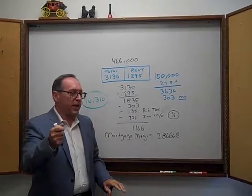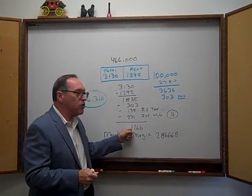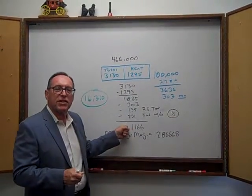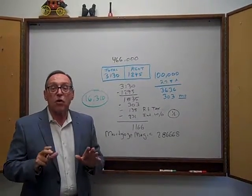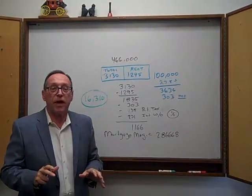If my numbers are correct, that means you can buy a duplex and your real payment is only $1,166 per month. That's lower than probably almost any rent you're going to pay.